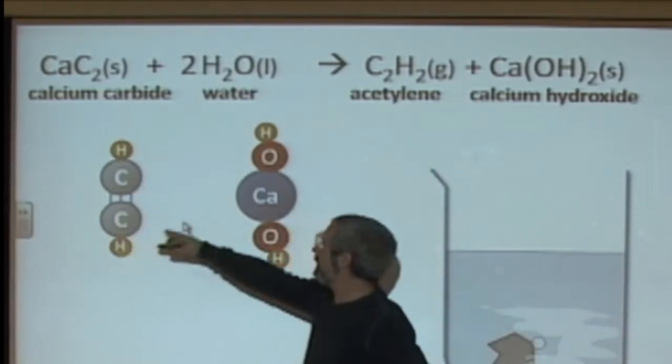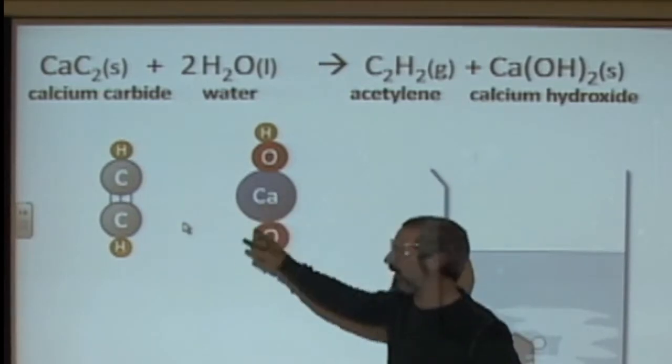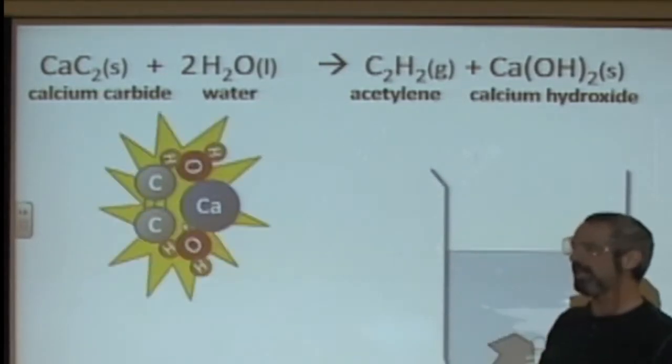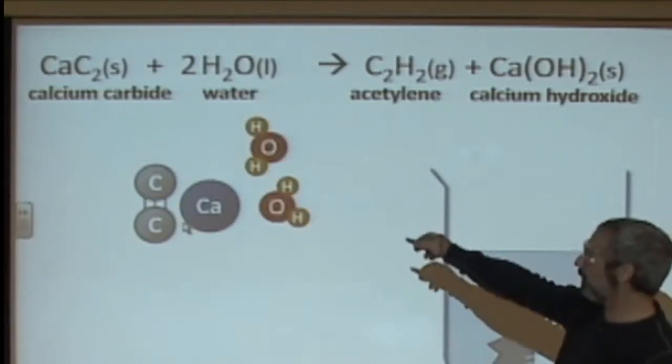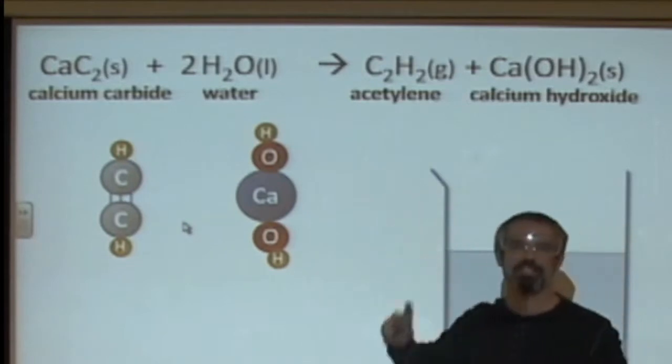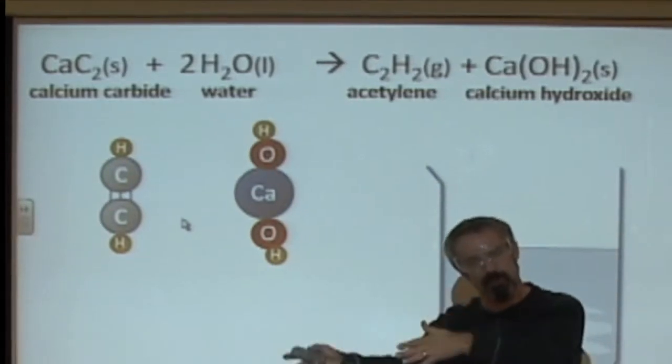Those are our products. The acetylene, C2H2, and the calcium hydroxide. These are the bubbles. This is what makes it milky white. But that's what I'm talking about. There's before and there's afterward. That's what a balanced equation is all about. It's a story before and after.